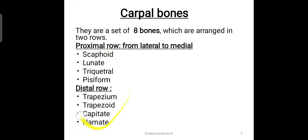To remember these names, there is a mnemonic: 'She Looks Too Pretty, Try To Catch Her.' The first letter of each word represents one bone from the carpal bone set. S stands for scaphoid, L for lunate, T for triquetral, P for pisiform, and in the distal row, T stands for trapezium, T for trapezoid, C for capitate, and H for hamate.